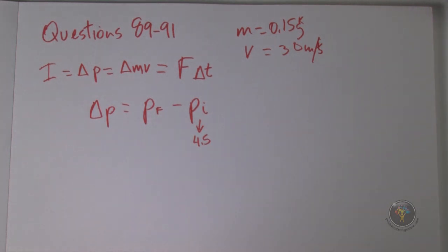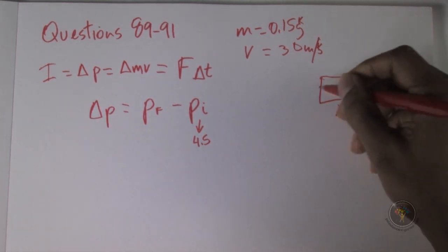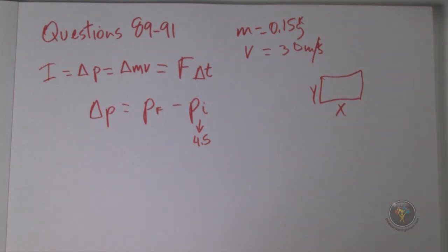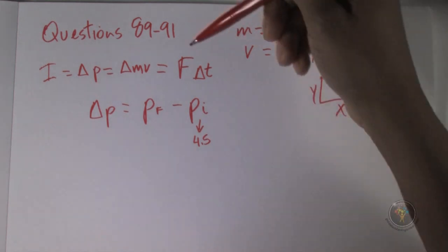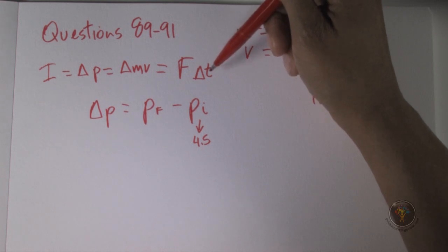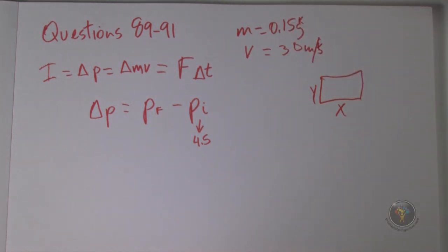We can calculate the impulse from the graph. The graph has time on the x-axis and force in Newtons on the y-axis. If you multiply the units of the x-axis by the units of the y-axis — just like finding the area of a rectangle — you get force times time, which equals impulse. So the area under the curve gives us the impulse.